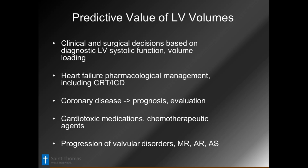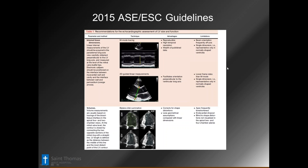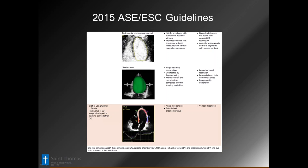From the 2015 ASE/ESC guidelines, these are the more traditional ways of looking at the ventricle in terms of dimensions: lining it up properly in the long axis view across the mitral tips, the biplane method, using contrast when needed — which everyone should be using very freely these days — and what we'll talk about today: 3D and global longitudinal strain.